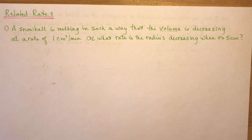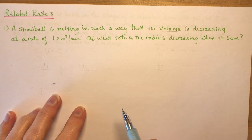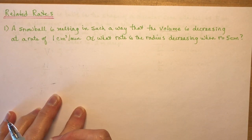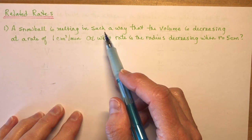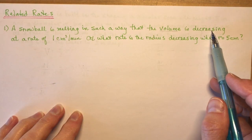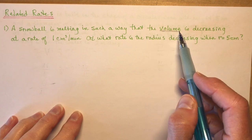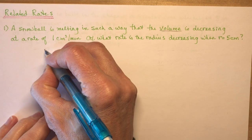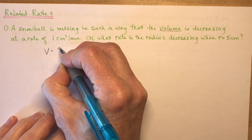So normally it's with respect to time. I've got four different word problems here that I think by the time I'm done you'll have a good grasp of what you should be doing. It says a snowball is melting in such a way that the volume is decreasing, so we need an equation for the volume of a snowball — that's the first thing I'm going to write out, and then I'm going to jump back to reading the problem.